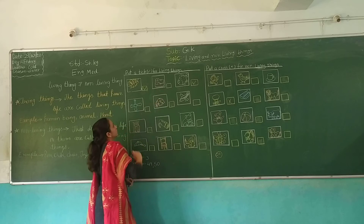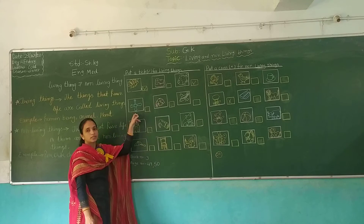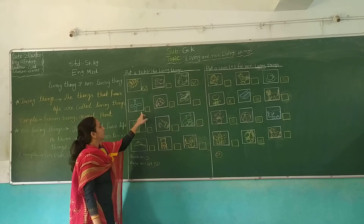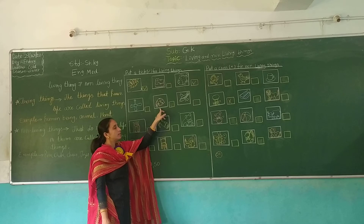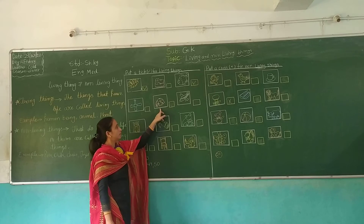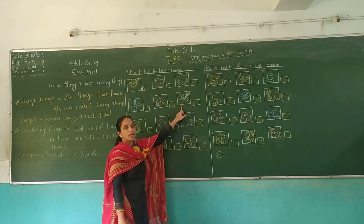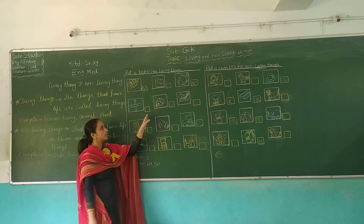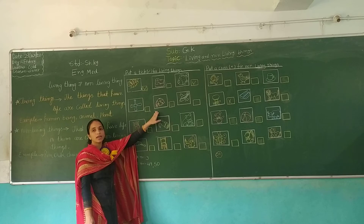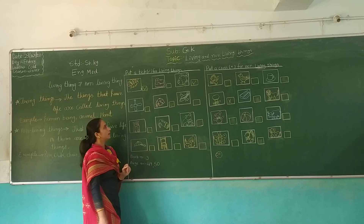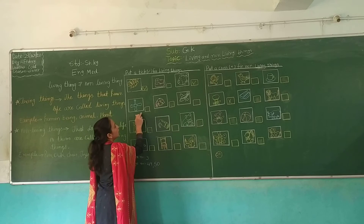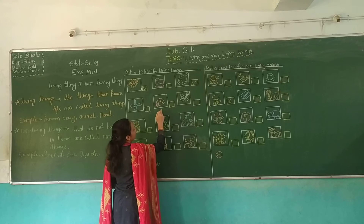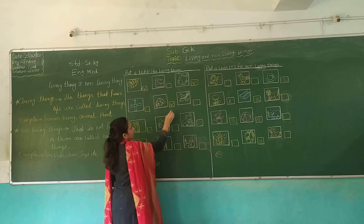Shoes is a non-living thing. And next, which picture is this? Fan. Fan is a non-living thing. Ladybird is a living thing. And which picture is this? Aeroplane. Aeroplane is a non-living thing. So among these three, ladybird is the living thing — put a tick in its box.